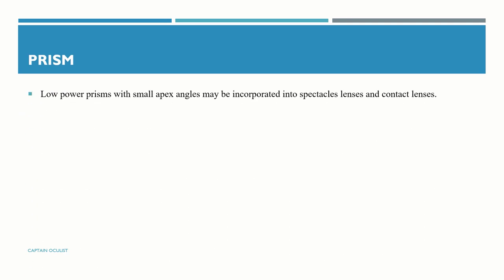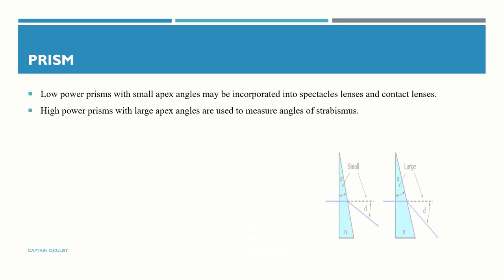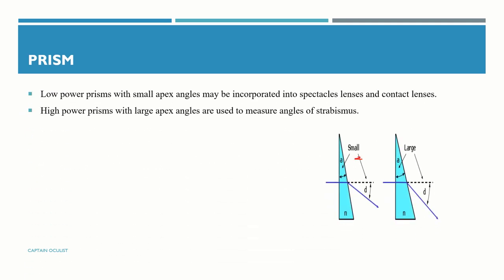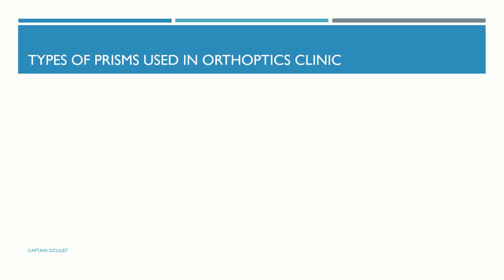Prisms which have lower power and a small apex angle can be easily used in spectacle lenses and contact lenses. Prisms which have higher power and a large apex angle are used to measure angles of strabismus — how much the eye is deviated from its normal position.